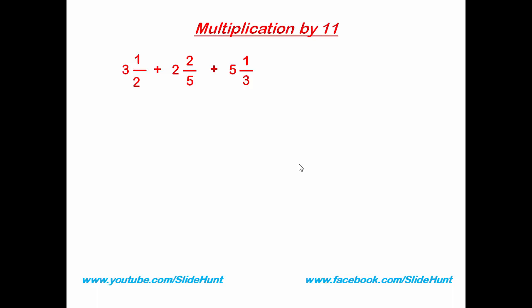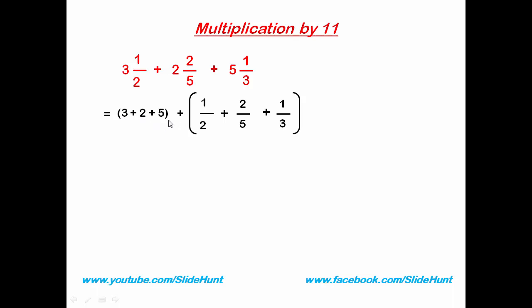First we separate the whole numbers and the fractional values, something like this. Now add all the whole numbers: 3 plus 2 is 5, 5 plus 5 is 10. Add a plus sign. Next we add the fraction values.